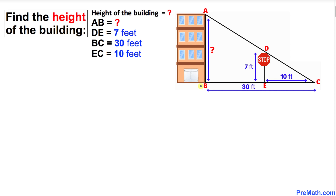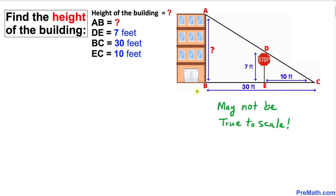Welcome to Pre-Math. In this video tutorial we have this interesting problem. As you can see in the figure, we have a building with height AB, a stop sign DE whose height is seven feet, shadow BC is 30 feet, and shadow EC is 10 feet. We are going to calculate the height of this building.